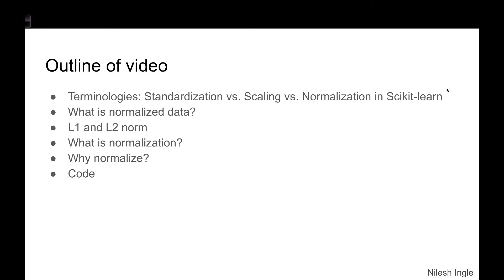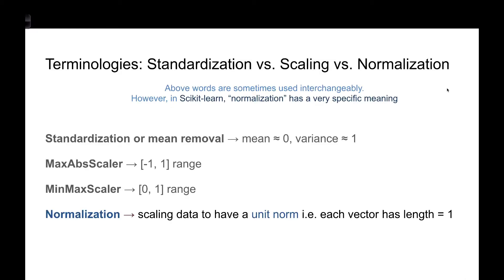In previous videos you've learned about standardization and scaling. Standardization, or mean removal, means that for any given dataset we are setting the mean to zero and variance close to one. If we use a max-abs scaler we are converting the data into a range of minus one to one, and if we use a min-max scaler then we are converting the data into a range of zero to one.